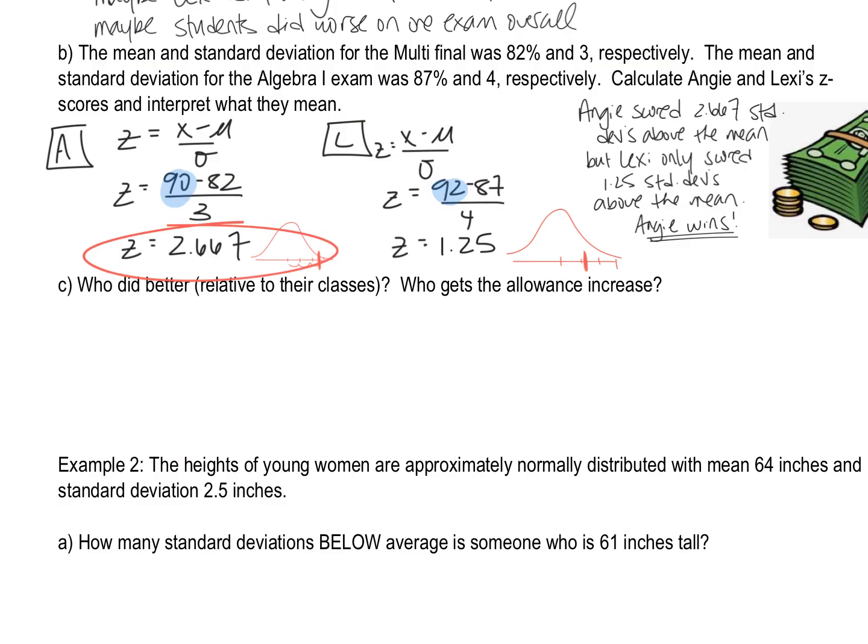And so I wrote off to the side here, Angie scored almost three standard deviations above the average for her class. But Lexi only scored 1.25 standard deviations above the average for her class. Therefore, when you standardize those two scores, Angie is the winner.